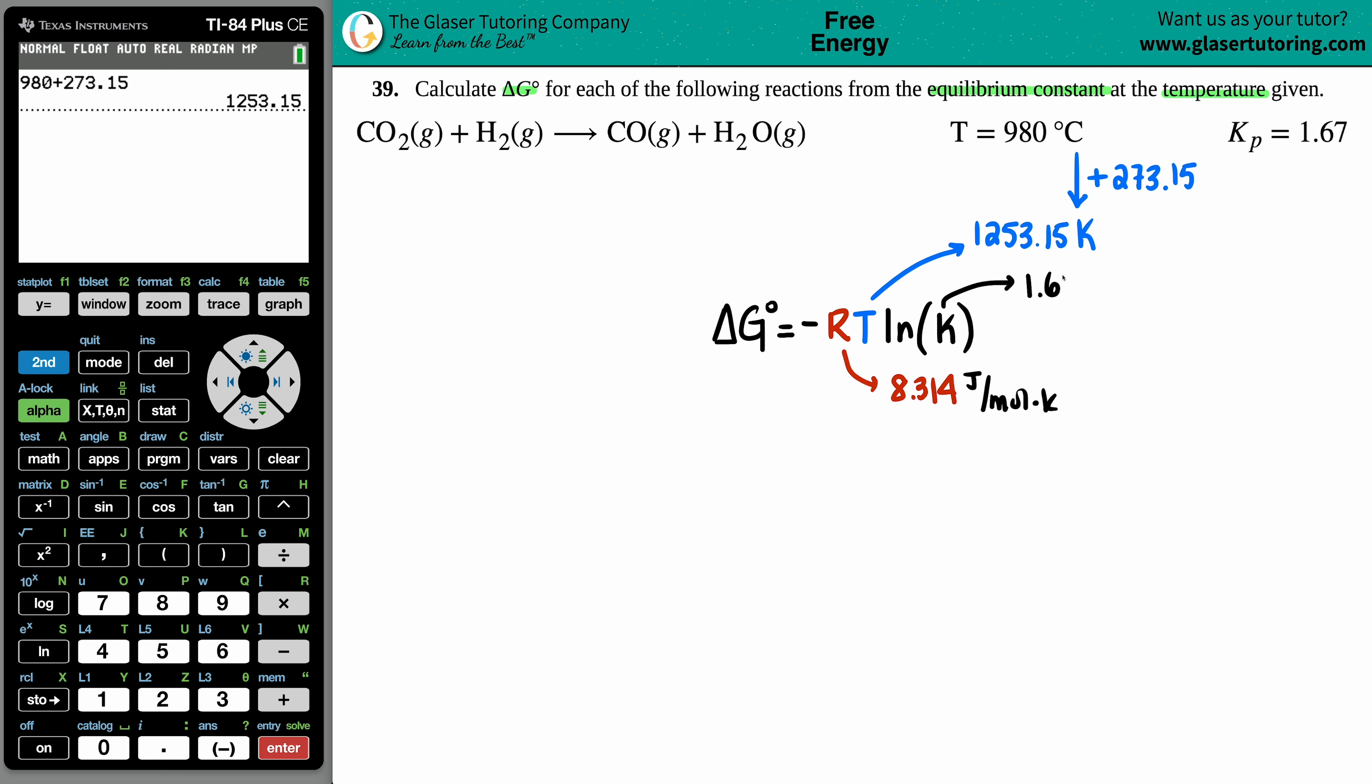Let's fire away, plug it all in. ΔG = negative, the R value is 8.314, that's the standard, temp is 1253.15.